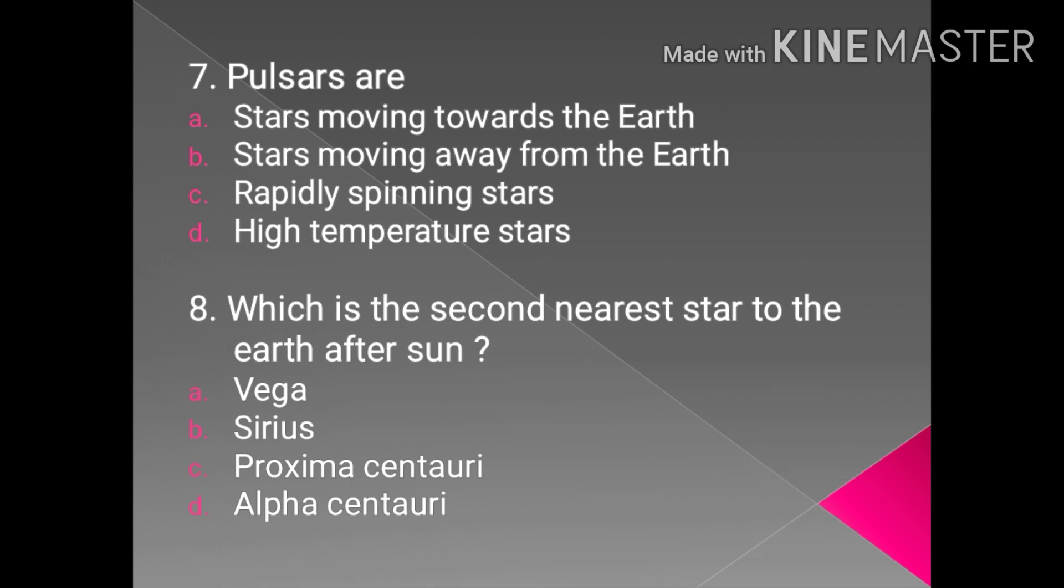It is a star which radiates two straight beams and continuously spins. So the two beams spinning seems to be like on and off. Therefore it is named as pulsar. So the correct answer is rapidly spinning stars.